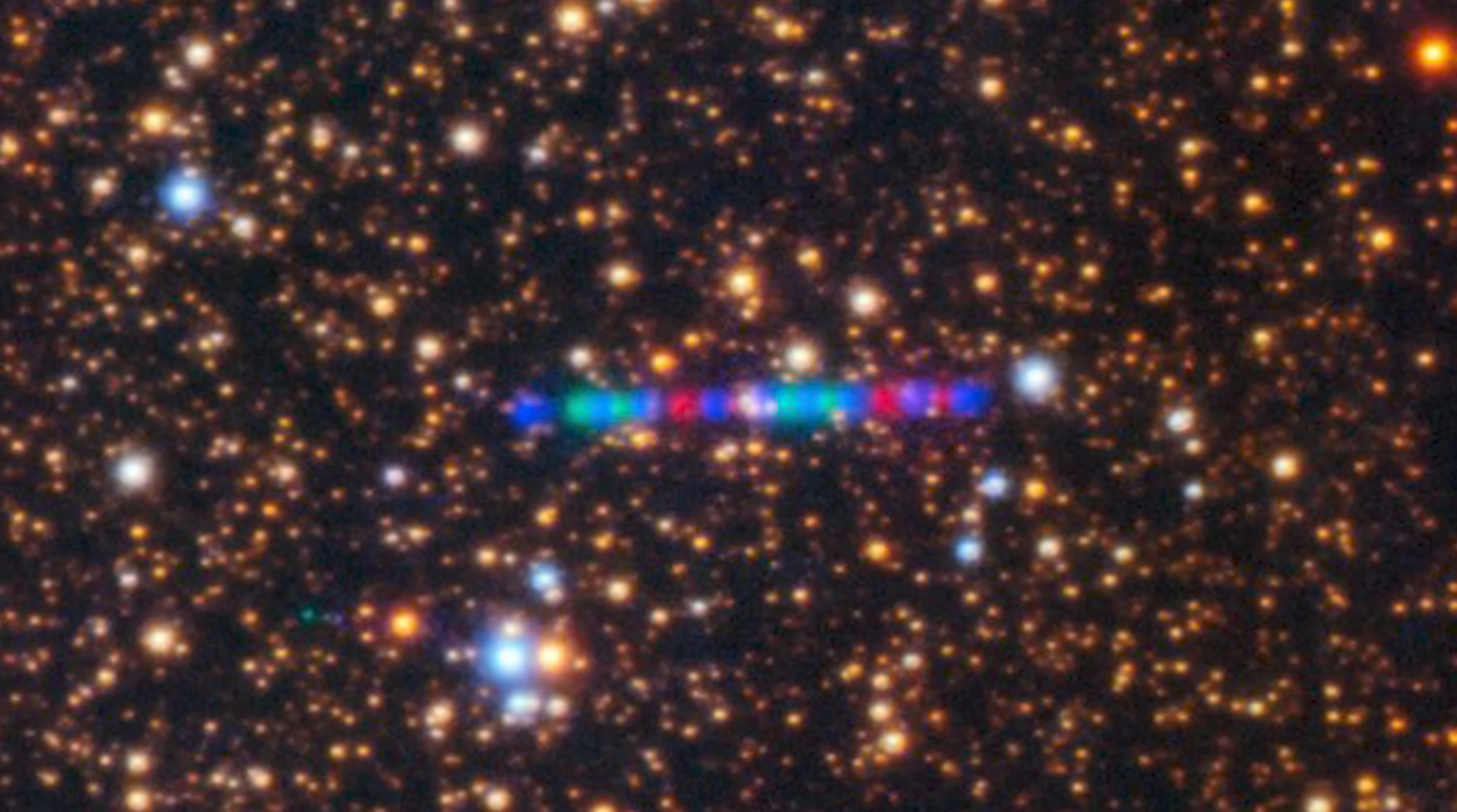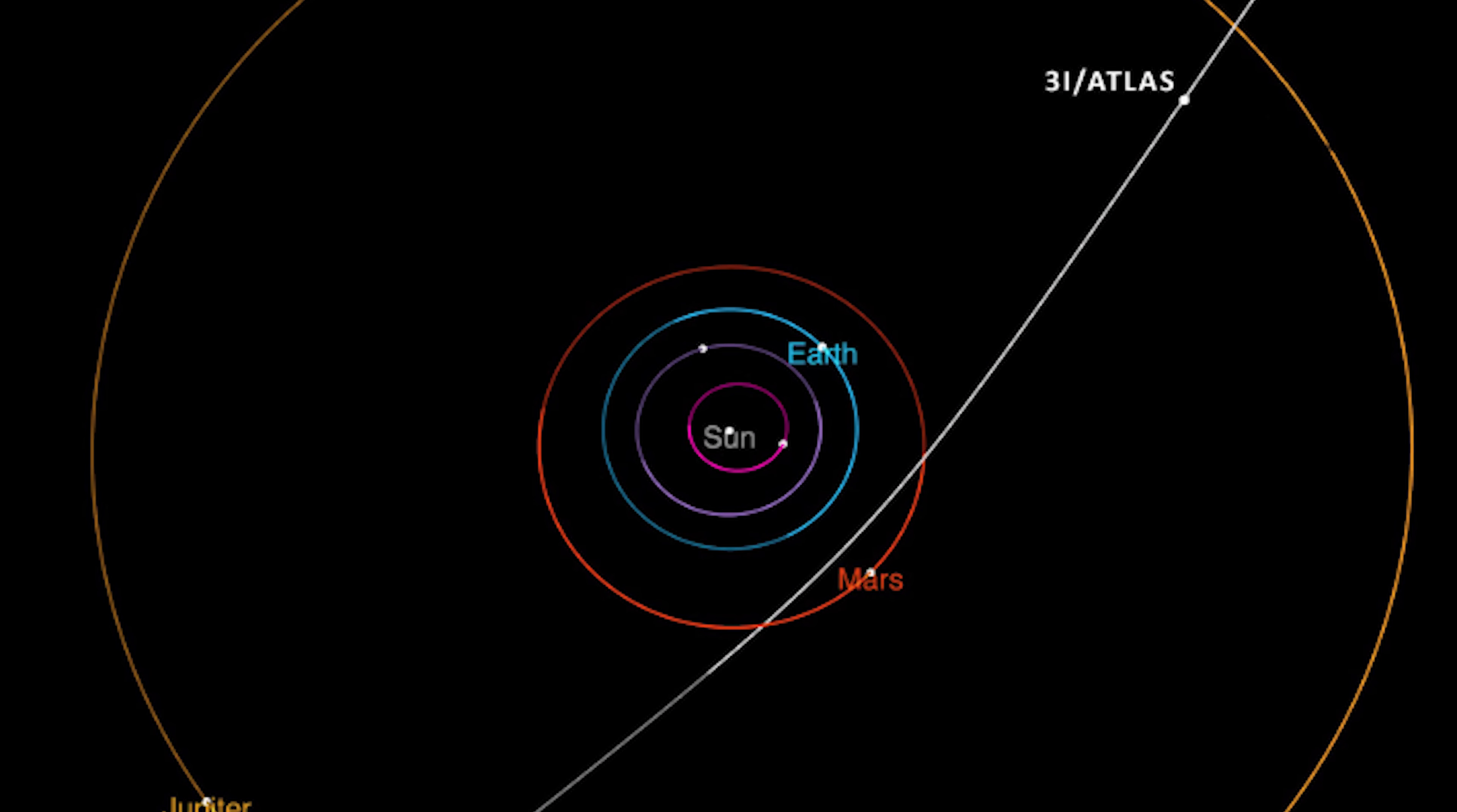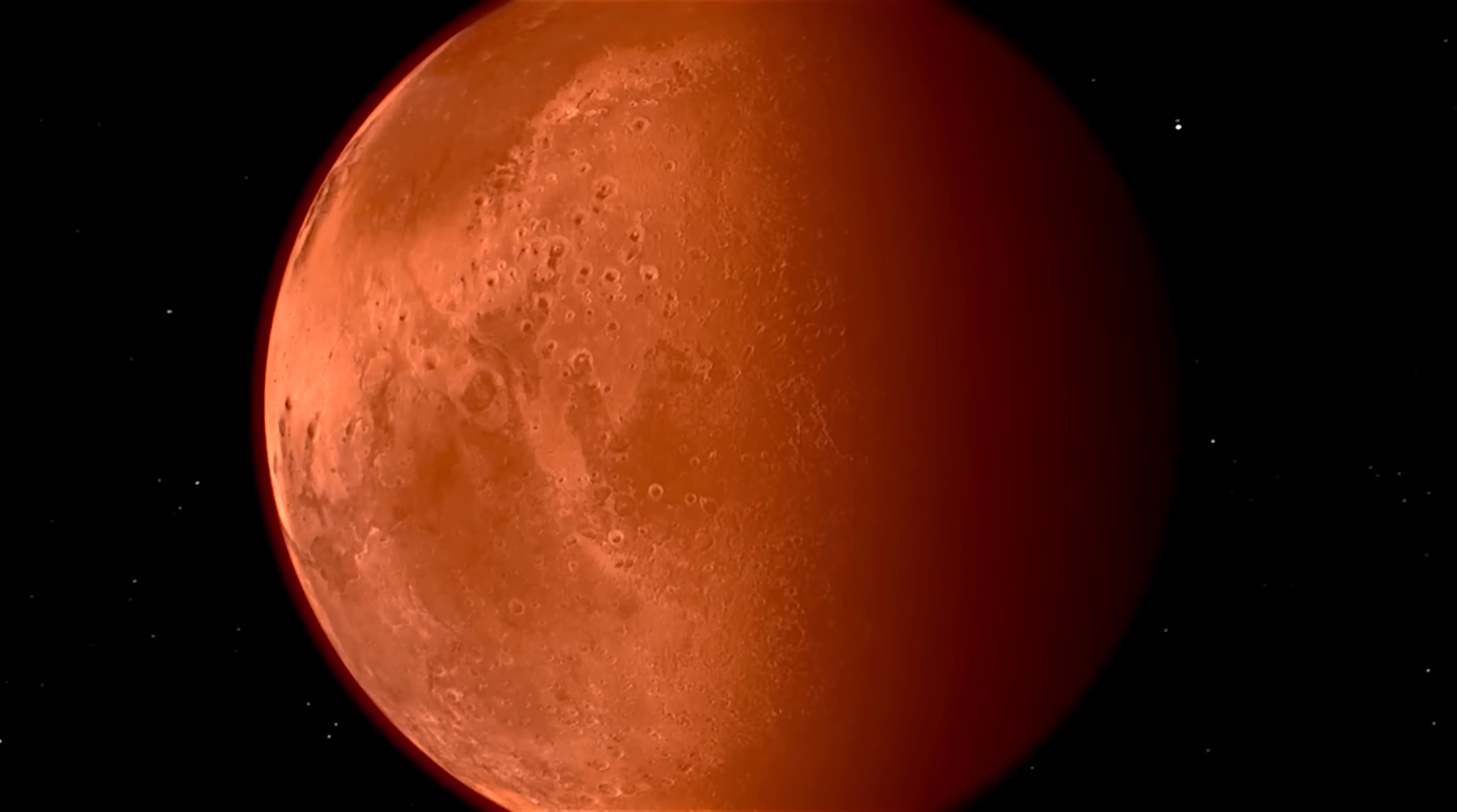Even more unusually, its trajectory is retrograde, moving opposite to the direction of planetary orbits around the Sun and is almost perfectly aligned with Earth's orbital plane. In addition, it passes very close to the orbits of major planets, such as Jupiter, Mars, and Venus.